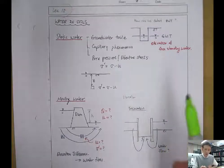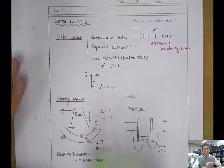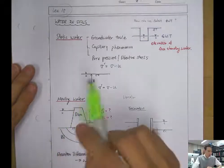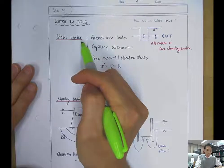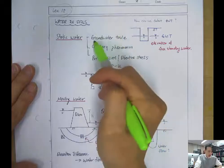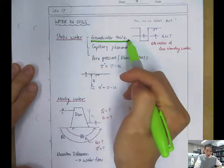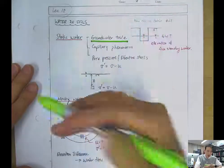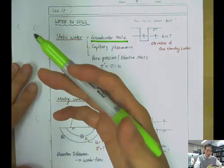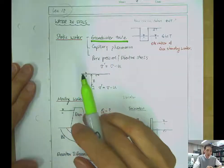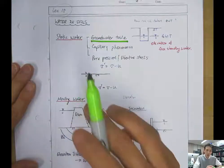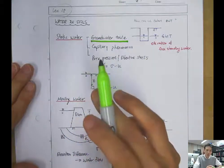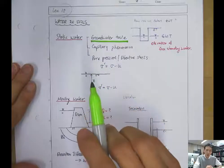Hello everyone. Welcome to lecture 15. In the previous lectures, we've talked about the static water and the effect of static water on the soil behavior. For example, we talked about how to find the groundwater table and what's the meaning of it. So above the groundwater table, we have a capillary rise, and below the groundwater table, the degree of saturation is 100%, so the pore water pressure increases from the level of the groundwater table.